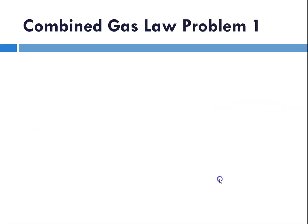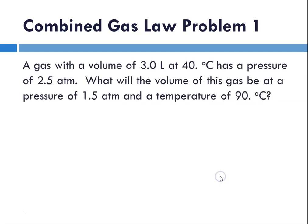So for now, let's solve a couple of problems. Combined gas law problem number one. A gas with a volume of 3.0 L at 40 degrees C has a pressure of 2.5 atm. What will the volume of this gas be at a pressure of 1.5 atm and a temperature of 90 degrees C?